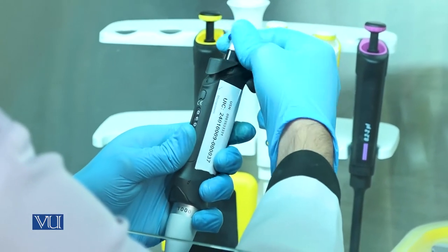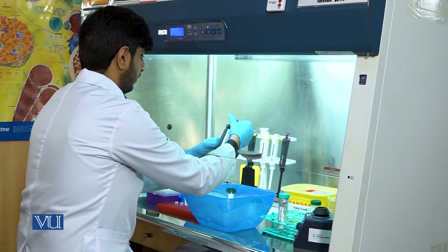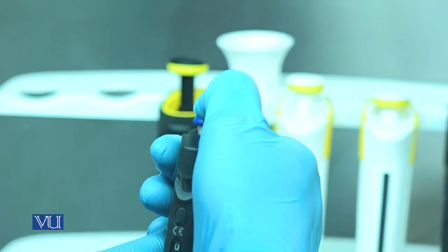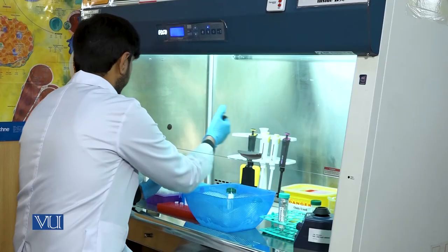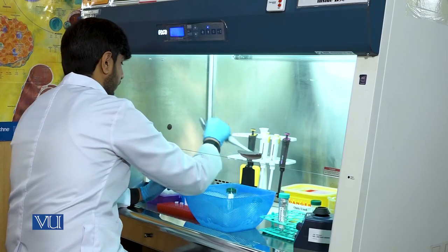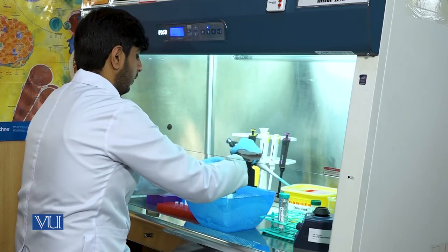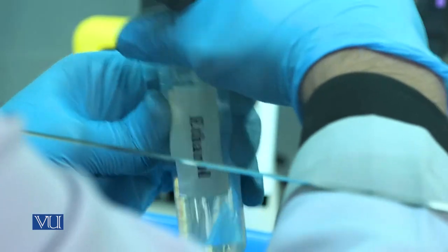Now, we will wash the RNA pellet with ethanol to remove the impurities. So, five to six hundred microliters of 70% chilled ethanol will be added into the eppendorf tube.